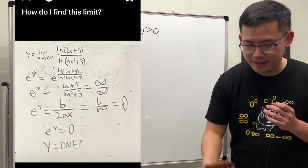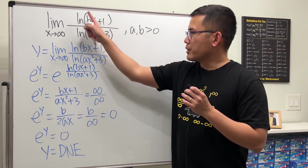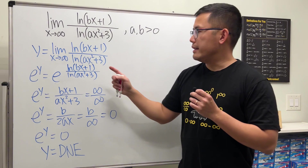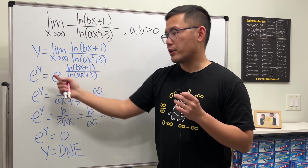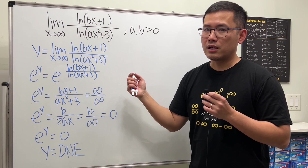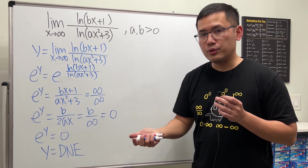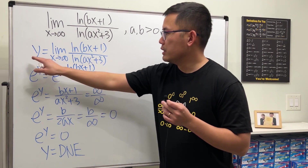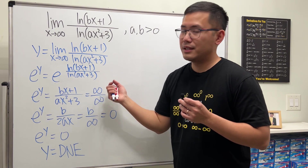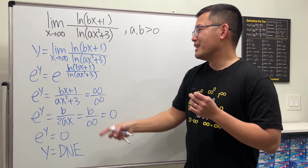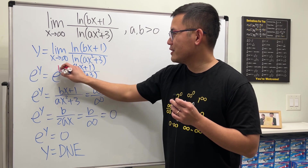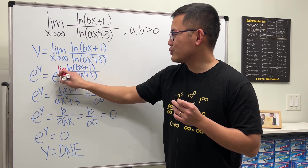Alright, let's have a look. Here's the limit, and a and b are positive. First you set this to be y, and then because you notice that we have natural log, you want to exponentiate both sides — e to this power and e to that power — and you got that. But here's one small thing: you are supposed to write down the limit as x approaching infinity, so don't drop that.